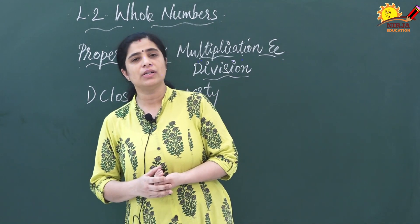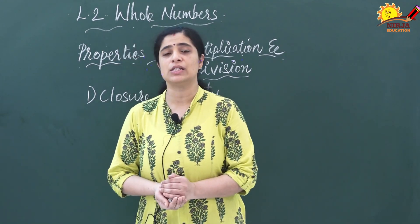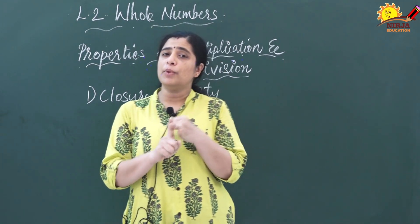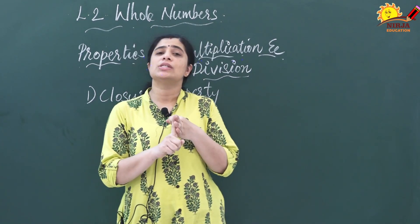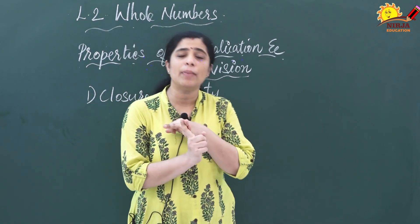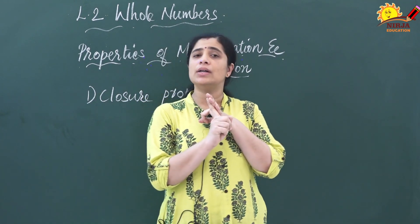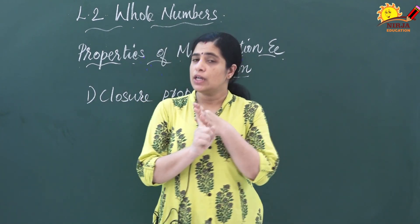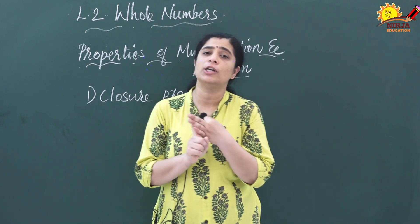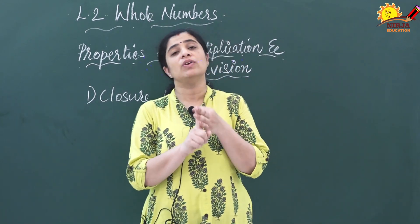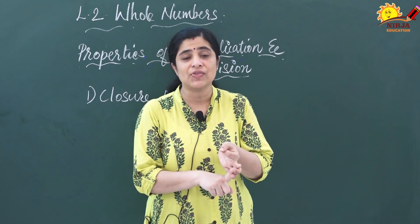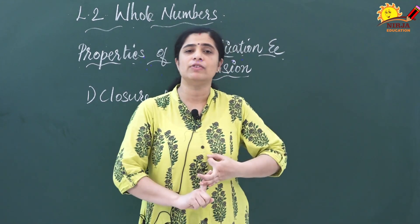What were the properties we have already discussed? The first one was closure property, commutative property, and associative property. These three were the common properties we discussed. Here also the same — we are going to discuss them for multiplication and division, and we will check whether these properties are satisfied.